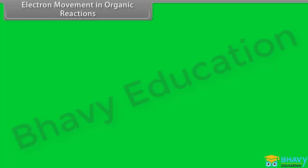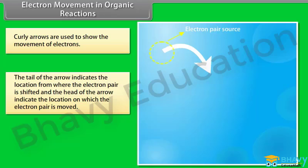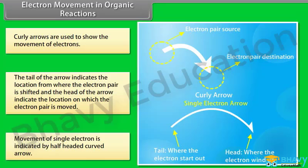Curly arrows are used to show the movement of electrons. The tail of the arrow indicates the location from where the electron pair is shifted, and the head of the arrow indicates the location to which the electron pair is moved. The movement of a single electron is indicated by a half-headed curved arrow.